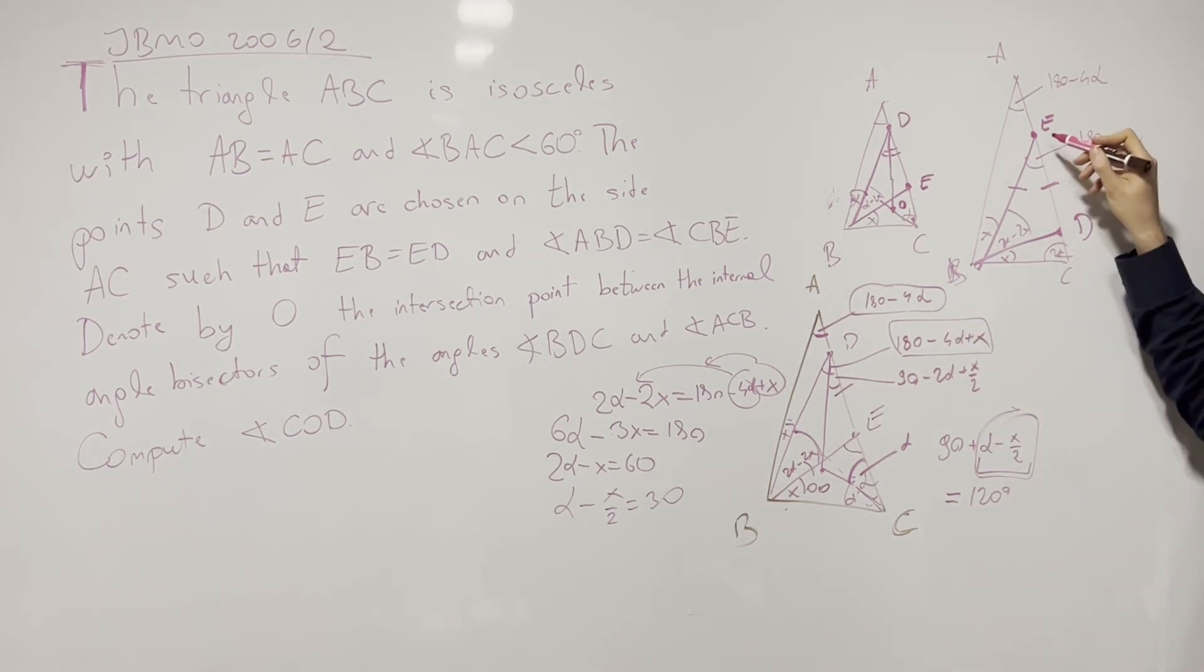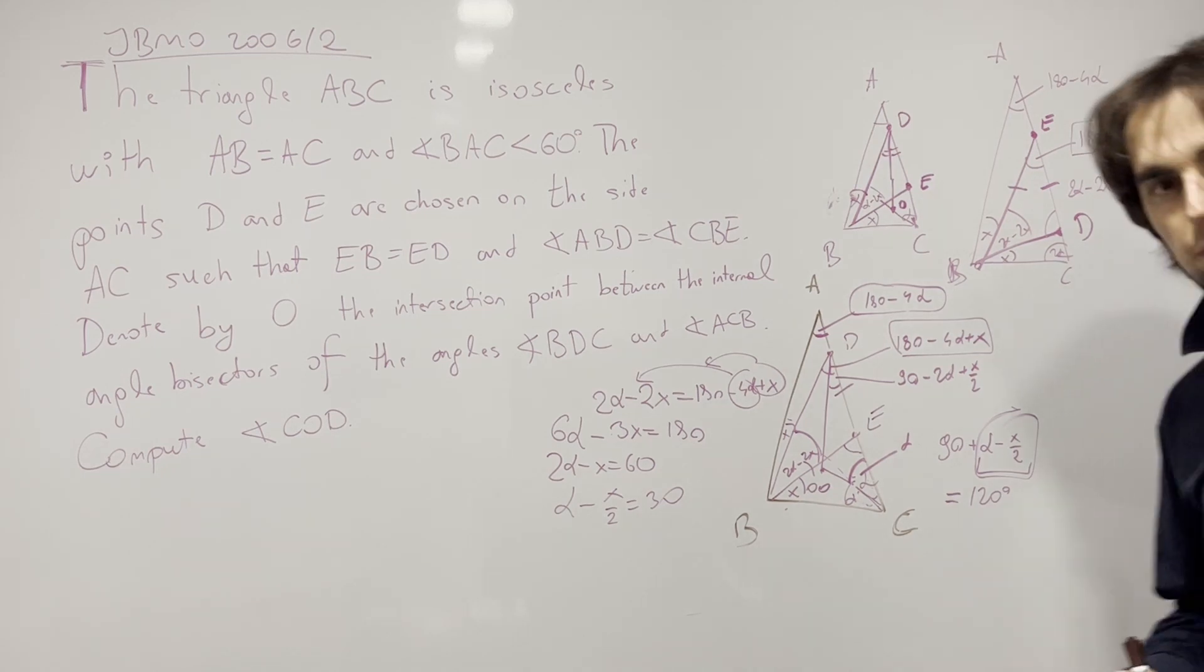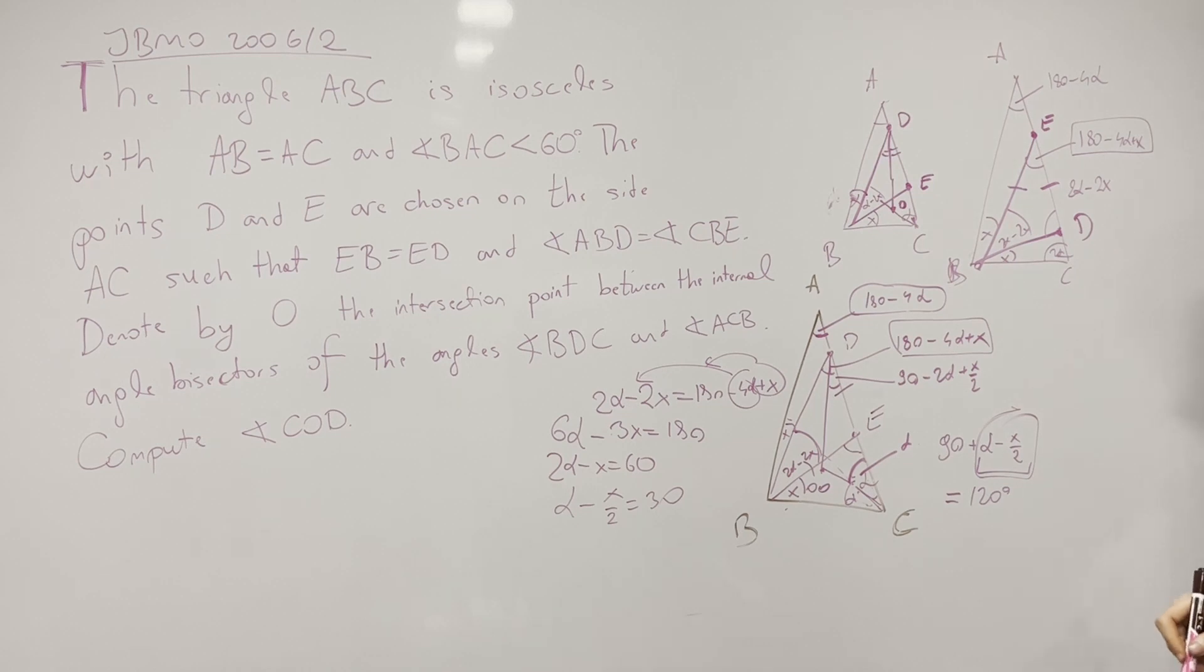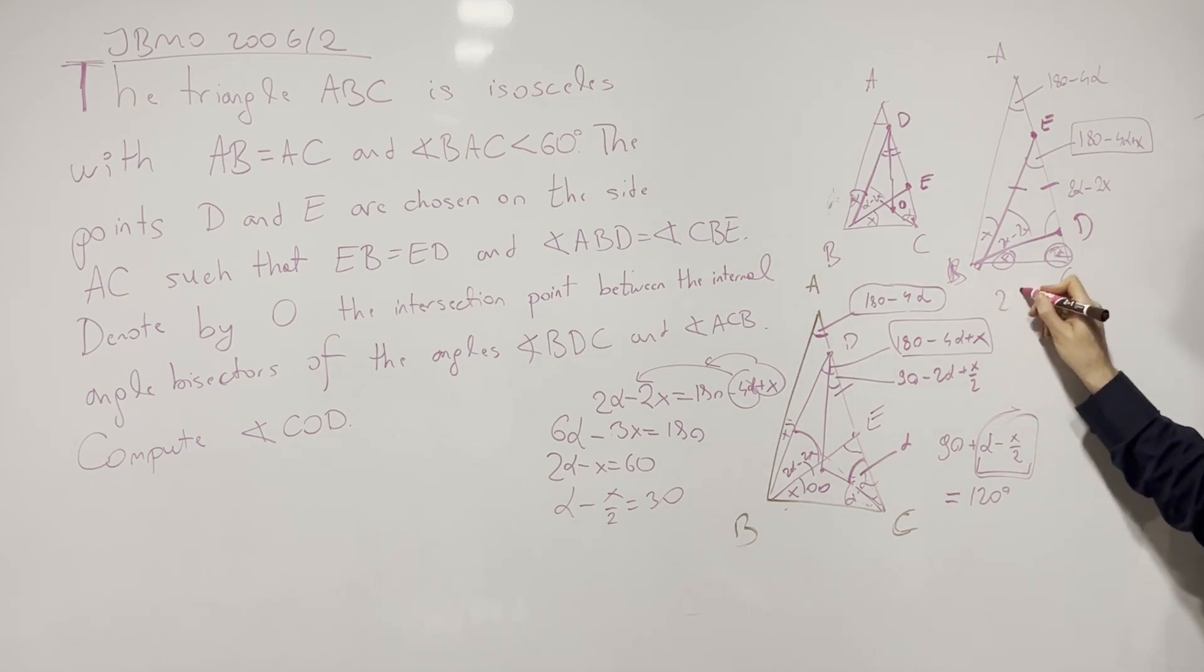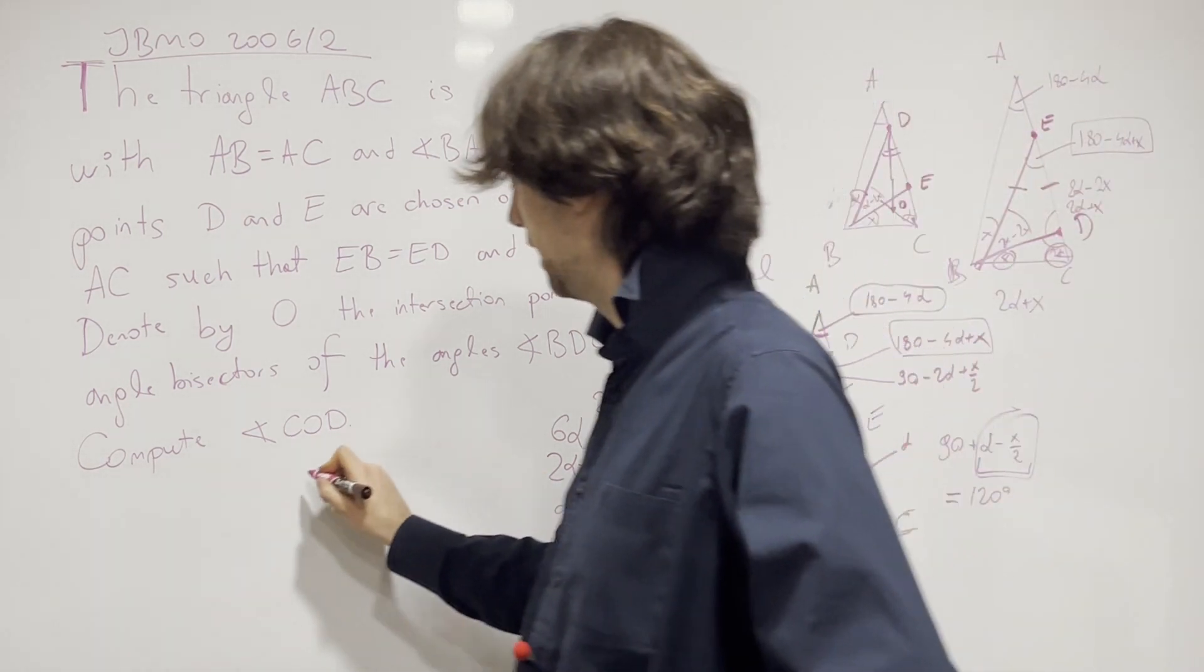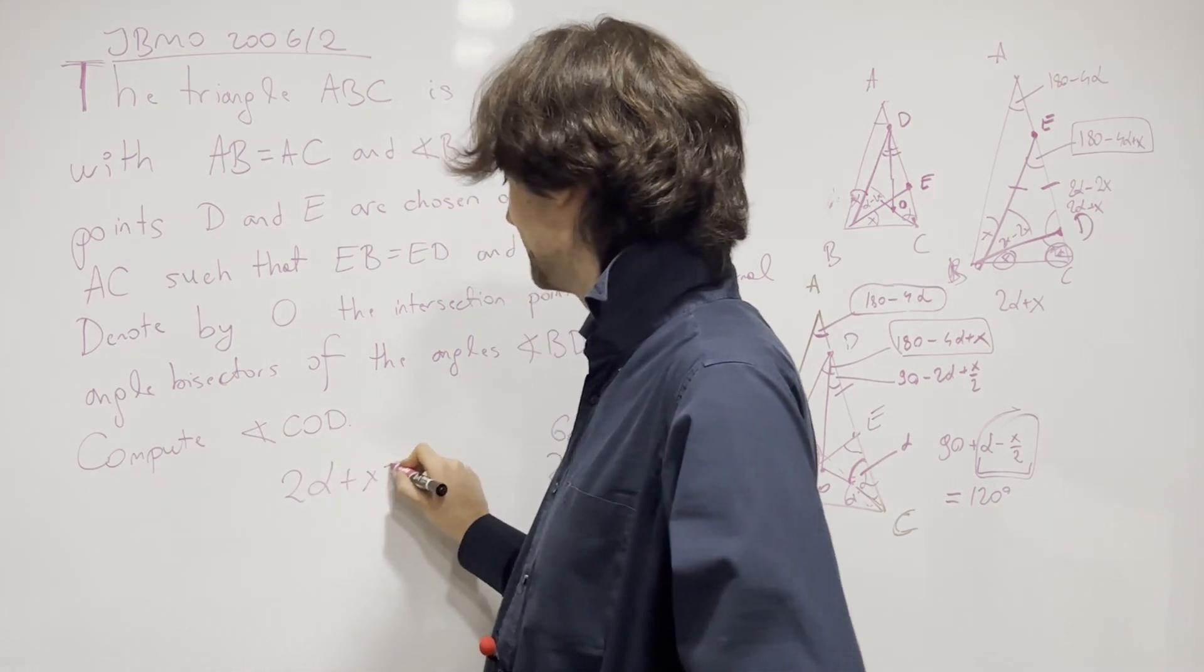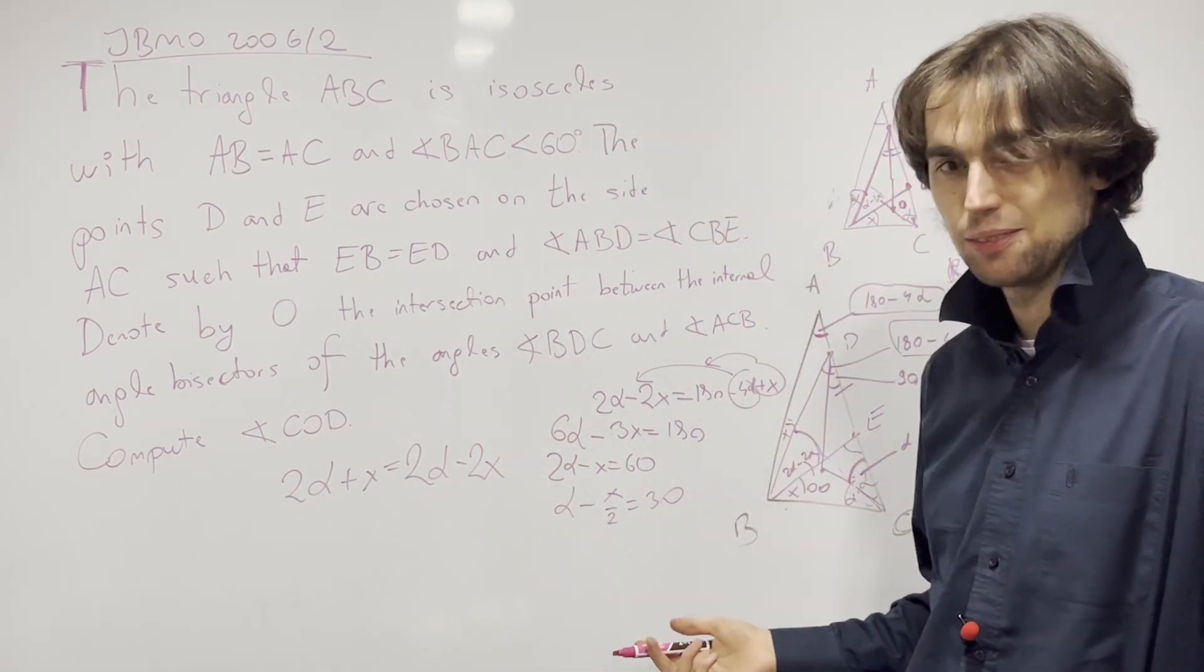Here's where I invite you to pause for the next 10 minutes and pose the problem further. And here's the next step. So we have EB equals ED. So this angle equals 2 alpha minus 2X. But now what seems to be a problem? You can go about it in many ways. One is that this angle plus this one equals 2 alpha plus X. So this angle is 180 minus 2 alpha plus X, which means this angle is also 2 alpha plus X.